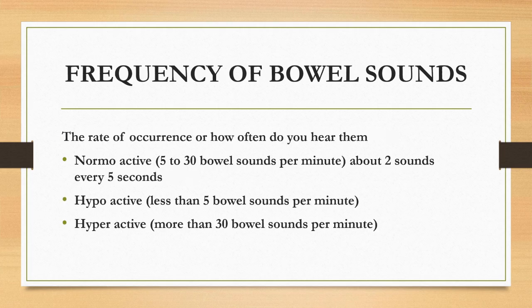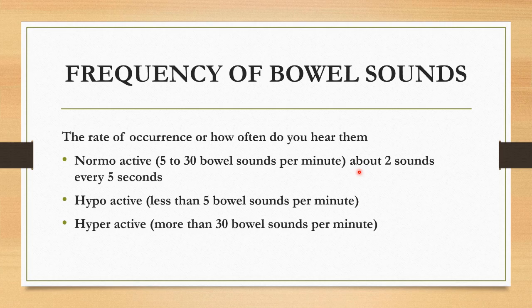The second assessment criterion is the frequency of bowel sounds — that means the rate of occurrence, or how often you hear the bowel sounds. Based on this, it is classified into normoactive, hypoactive, and hyperactive. Normoactive means you can hear 5 to 30 bowel sounds per minute, that is about 2 sounds every 5 seconds. Hypoactive means less than 5 bowel sounds per minute, and hyperactive means more than 30 bowel sounds per minute.